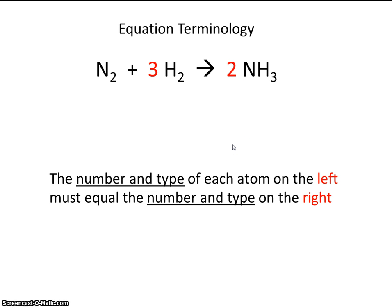The number and type of each atom on the left must equal the number and type on the right. This is called the law of conservation of mass. So whatever we have on the left has to be equal to what's on the right. That's the law of conservation of mass. We'll discuss that more in class and maybe do a few demonstrations with that.